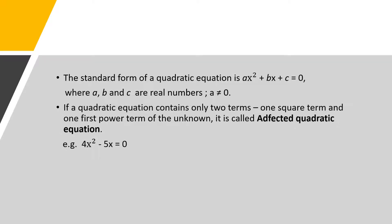If a quadratic equation contains only 2 terms — that is, one square term and one first power term of the unknown — it is called an adfected quadratic equation. For example, 4x squared minus 5x equal to 0. We observe that in this example the constant term is not there.